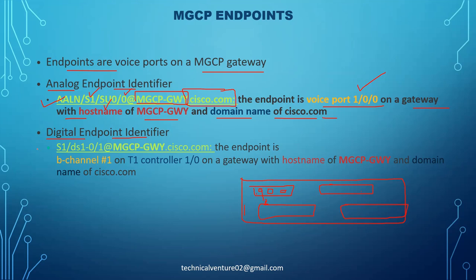For the digital endpoint identifier, the format is: 'ds1/s1/0/1@hostname.domain' — slot 1, DS1 card, port 0/1 — at the same hostname and domain name. The endpoint is a B-channel on a T1 controller, controller 1/0, on a gateway with that same hostname and domain name. This is how we define these endpoints.